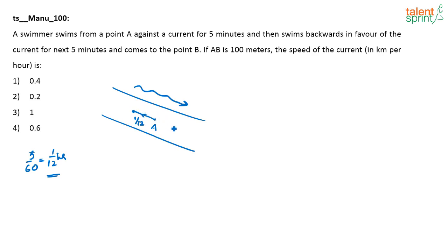Backwards in favor of the current for the next 5 minutes and comes to point B. So in the next 1 by 12th of an hour, he comes from this point to B, and the distance from A to B is 100 meters. The question is, the speed of the current is what you have to find out.